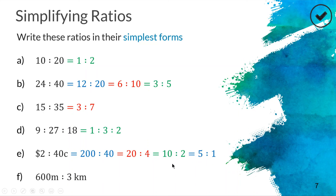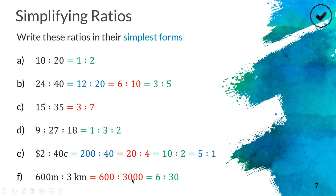For the last example, we have 600 meters as a ratio to 3 kilometers. We write both sides in the same units, so 3 kilometers becomes 3000 meters. Now we simplify 600 to 3000 — divide both sides by 100 to get 6 to 30. Then 30 is five lots of six, so this simplifies to a ratio of 1 to 5, fully simplified.